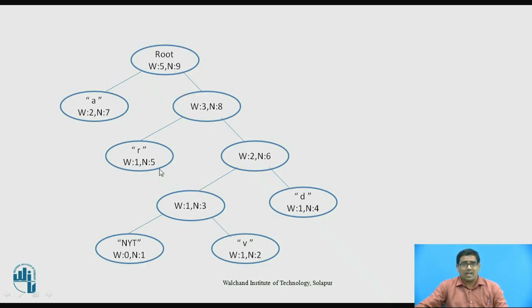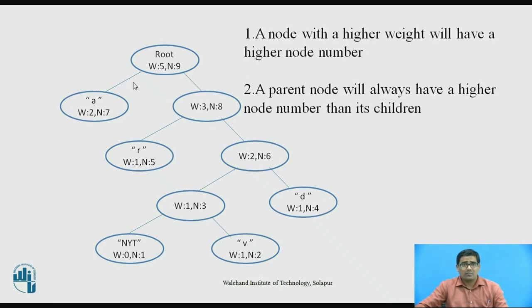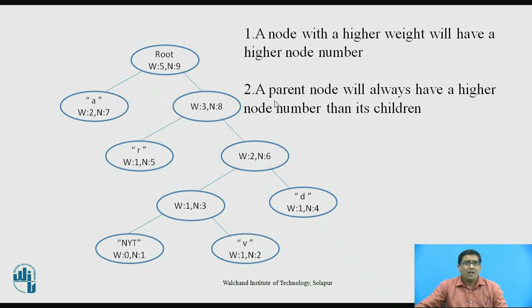First, consider this diagram and check whether this example satisfies the sibling property. The first property: a node with higher weight should have a higher node number — higher weight, higher node number. Comparing nodes, the lower weight has the lower node number. This satisfies the first property. The second property: a parent node always has a higher node number than its children. Here the parent node has the highest node number, always greater than its child nodes. Yes, the second property is also satisfied.